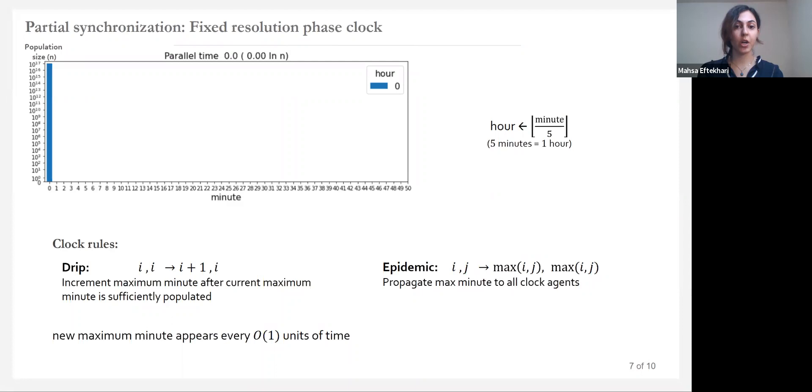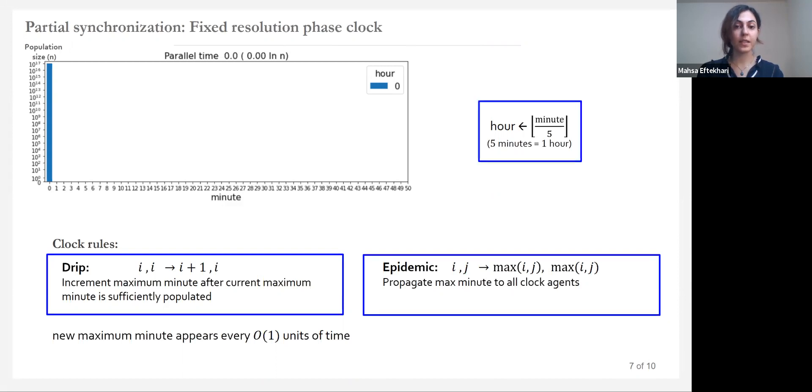In our protocol, we use the partial synchronization scheme. The clock rules consist of two types of reaction. Drip, which happens if two agents with the same value, which we called it minute, interact. One of them goes one minute ahead. An epidemic, which broadcasts the maximum minute. Now, we combine constant minutes, for example, five, into an hour. With this rule, because of the dripping reaction, a small constant fraction of agents move to the next minute before the majority of agents catch up, and the agents spend constant time per hour.